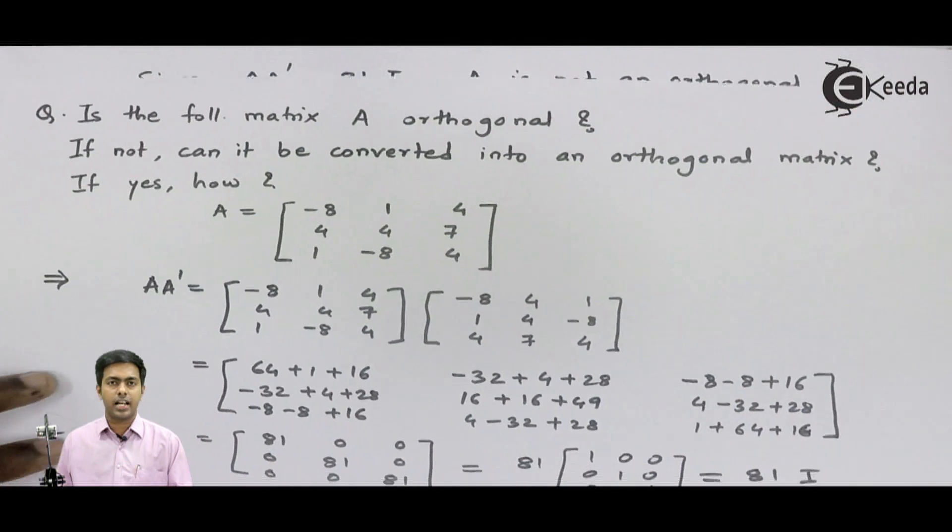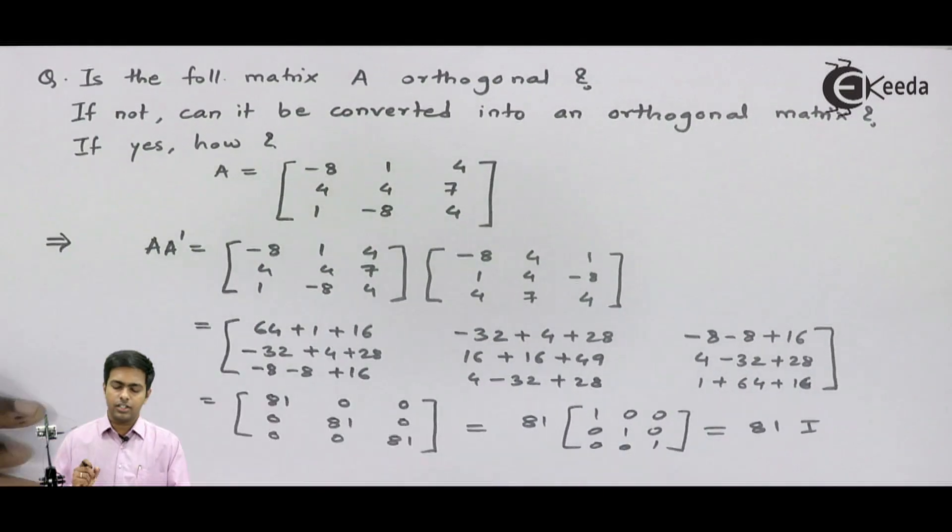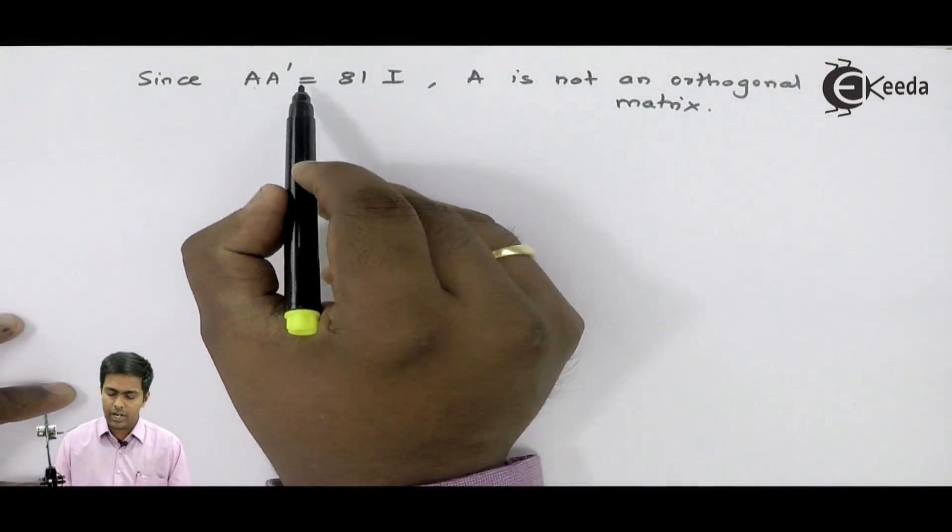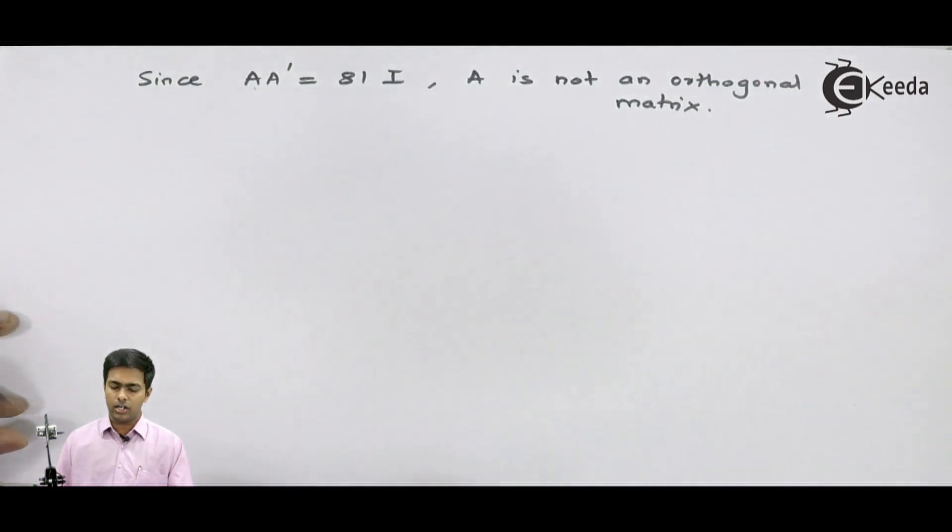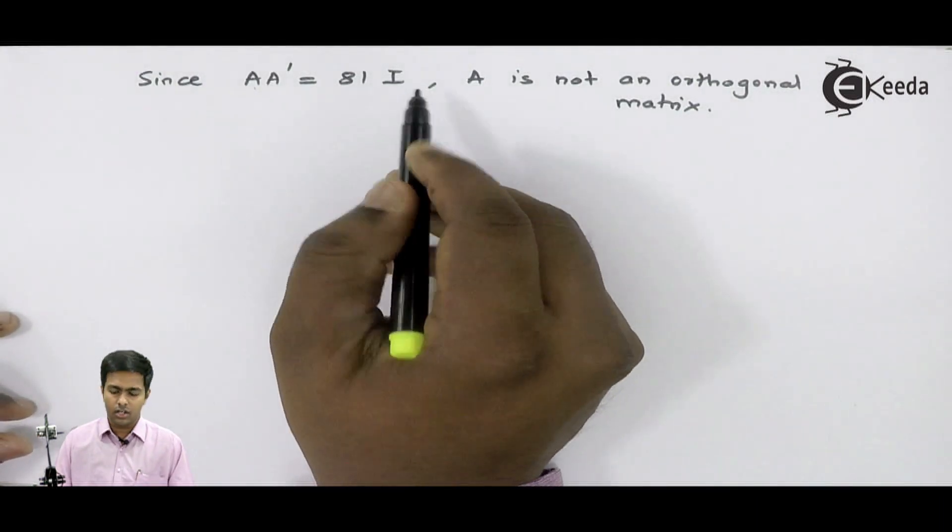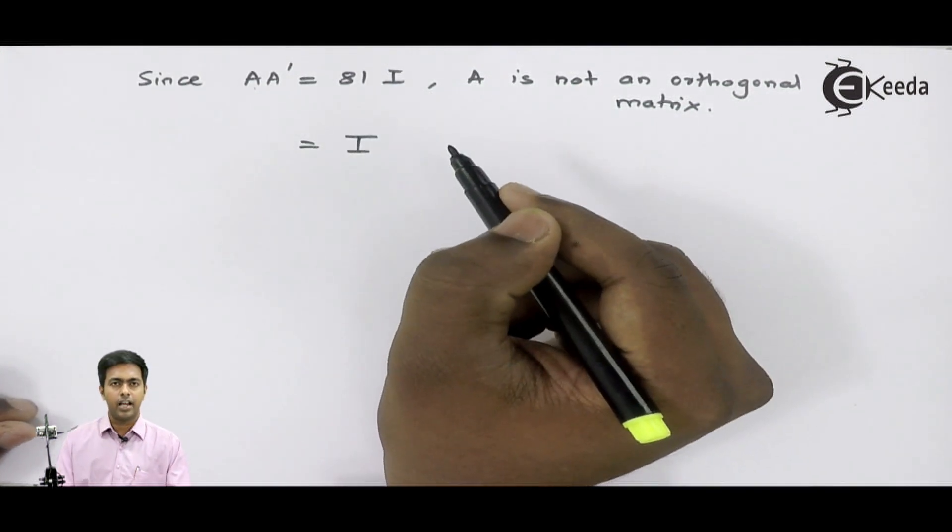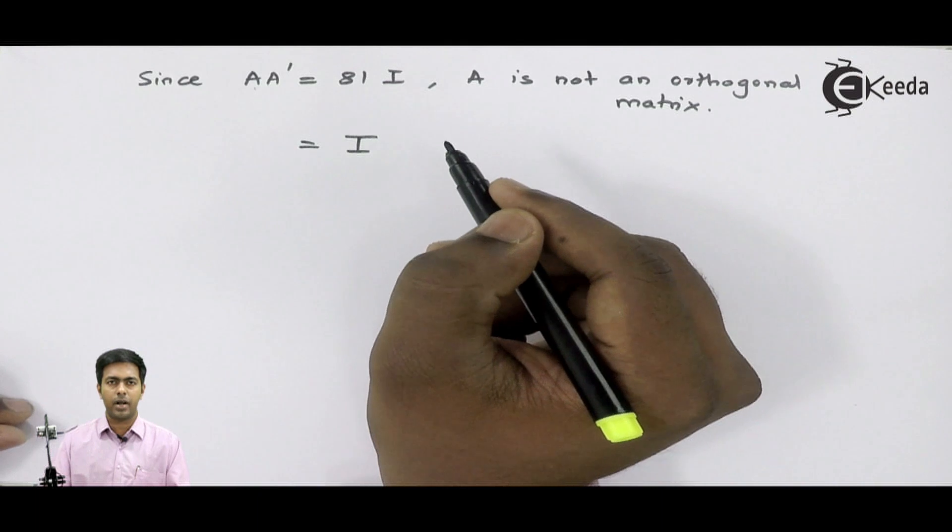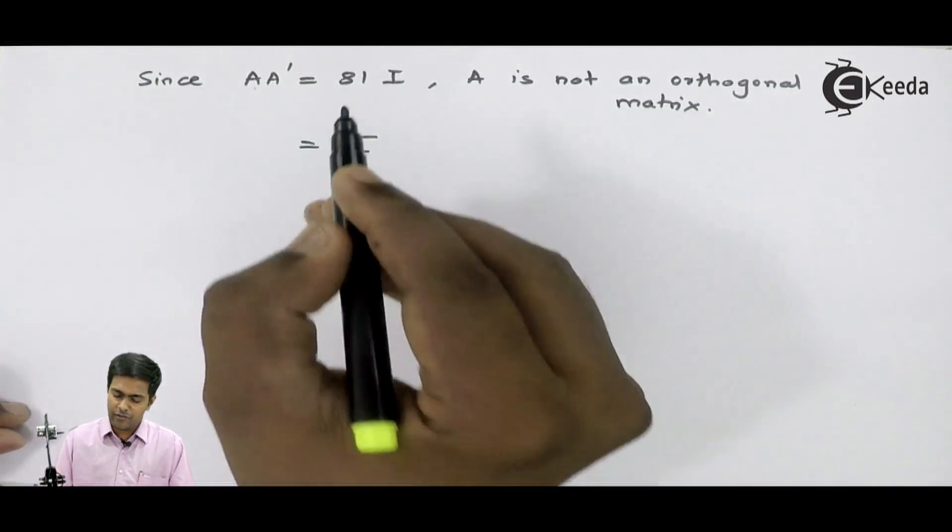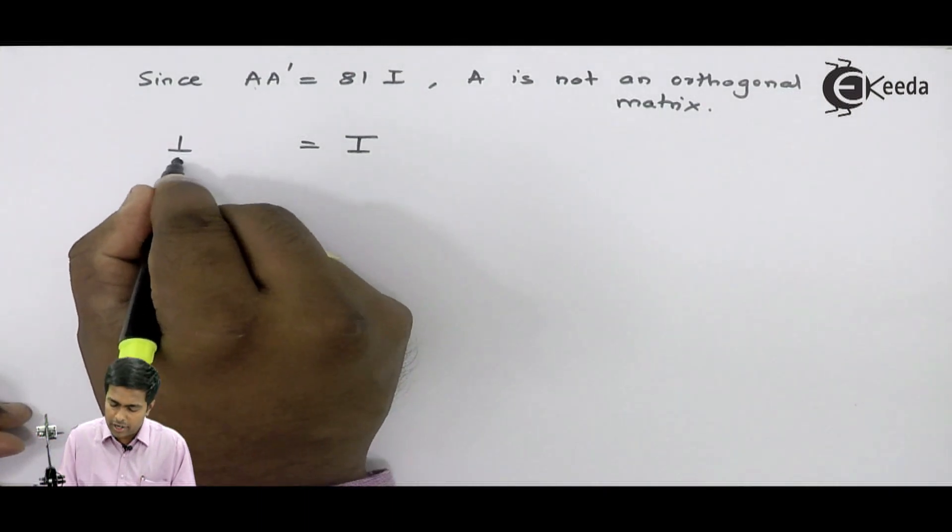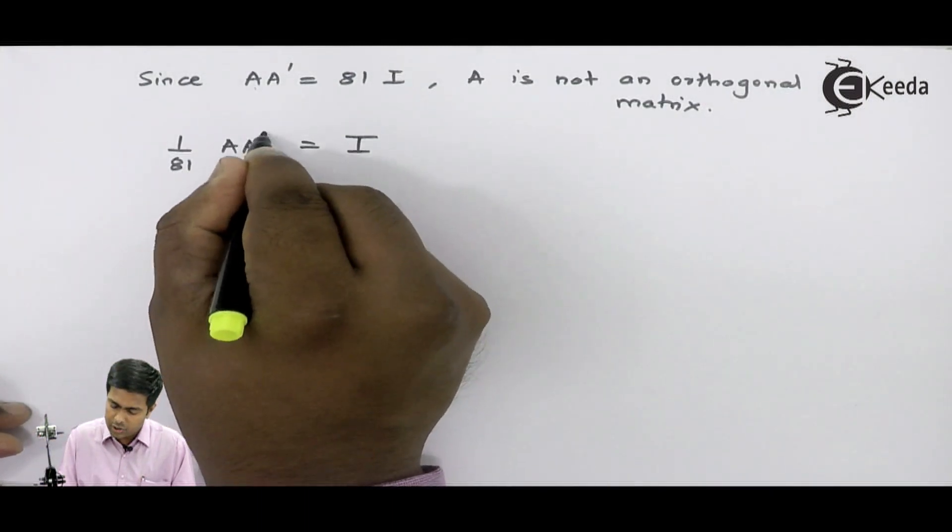Now the second question arises: if it is not an orthogonal matrix, can it be converted into an orthogonal matrix? Let's see. Since A into A dash equals 81I, and if I want this to be orthogonal, then I want I on the right-hand side. It means I just want the identity matrix on the right-hand side. What I will do is shift this 81 to the left-hand side. Here I will get 1 upon 81 into A into A dash.